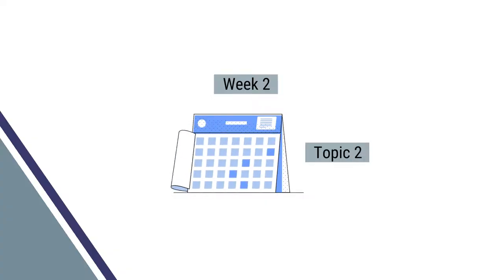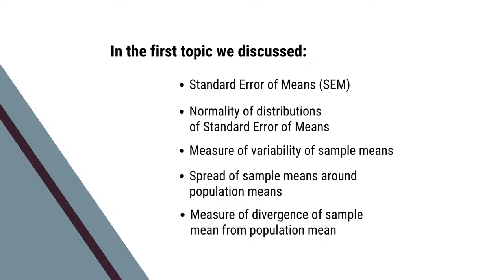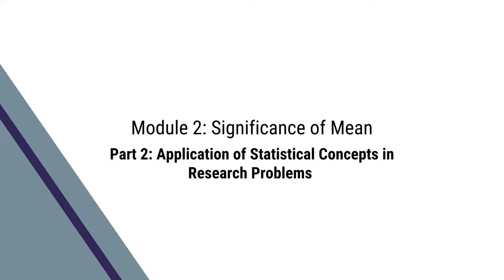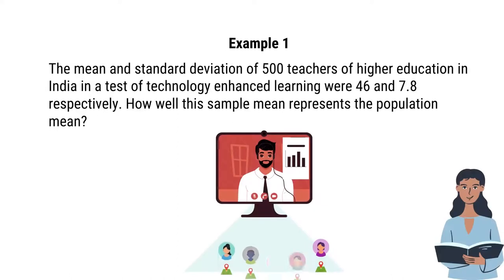In the first topic, we discussed standard error of mean, normality of distribution of standard error of mean, measure of variability of sample means, spread of sample mean around the population mean, and measure of divergence of sample mean from population mean. In this topic, we shall be taking up the applications of these concepts in research problems. Let us take an example.